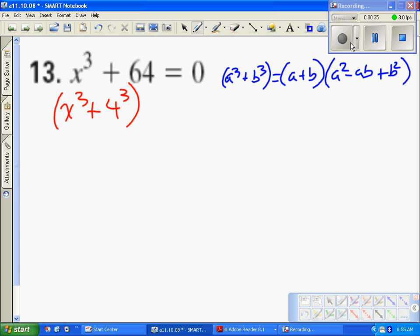So if that's the algorithm, this should be pretty straightforward. This is going to be x plus 4 times x squared minus 4, that's not true, yeah, 4x plus 16.